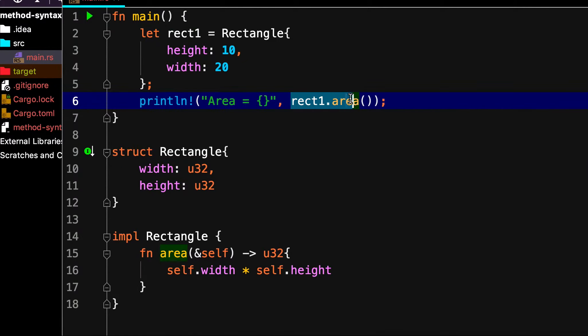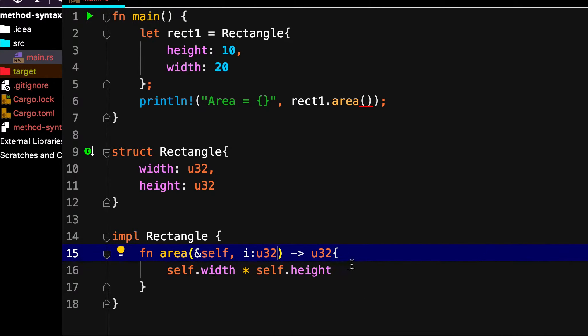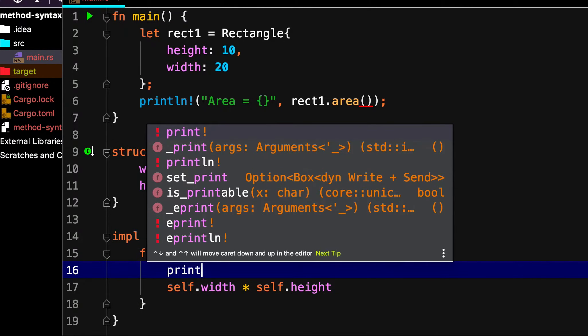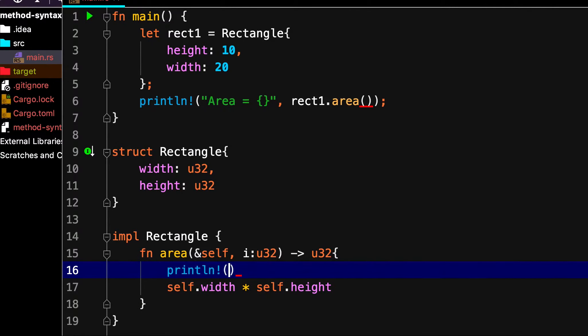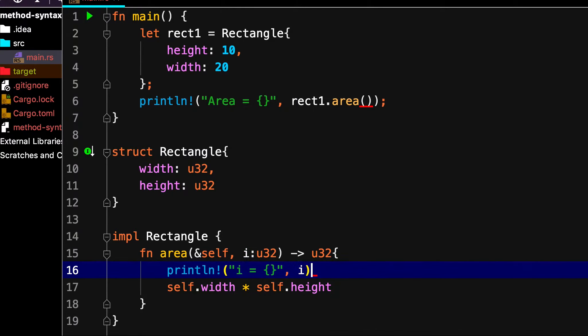So here we are applying the method syntax. And let's say we pass just a dummy value, i of u32, just to make sure that we can also pass additional parameters.